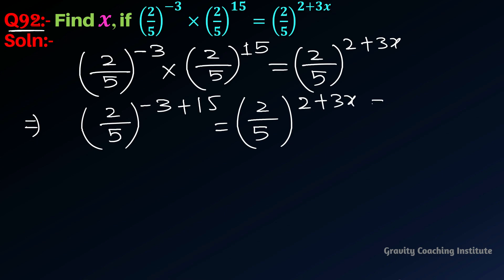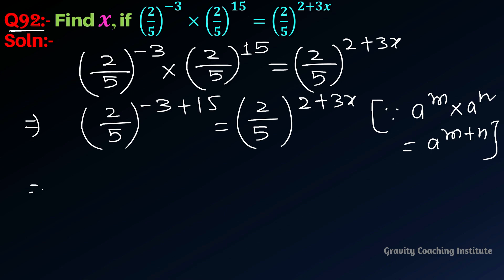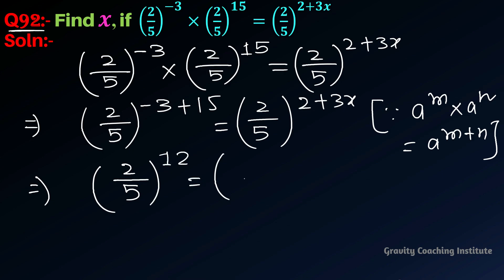We know that when the base is equal, we add the exponents. So we get (2/5) to the power 12 — that is minus 3 plus 15 — equal to (2/5) to the power 2 plus 3x.